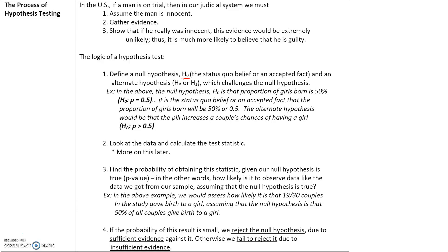The company challenges this null hypothesis. The alternative hypothesis would be that the pill increases a couple's chances of having a girl — this is what the company is claiming — so the probability of having a girl after taking the pill is greater than 0.5.